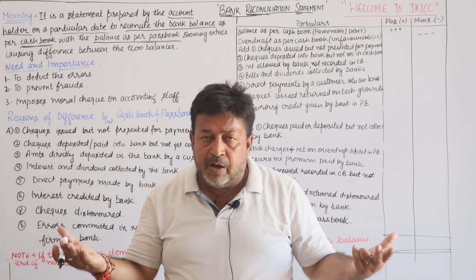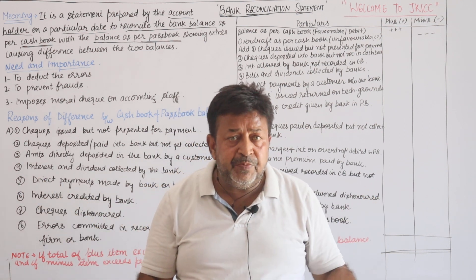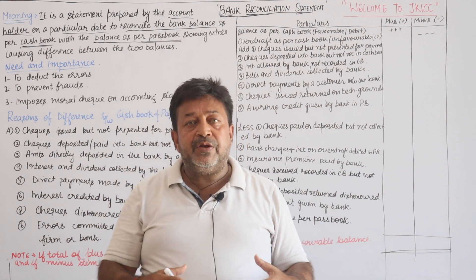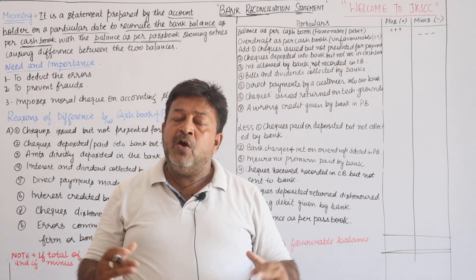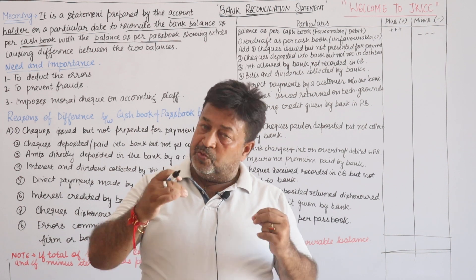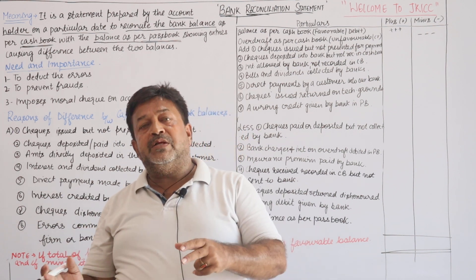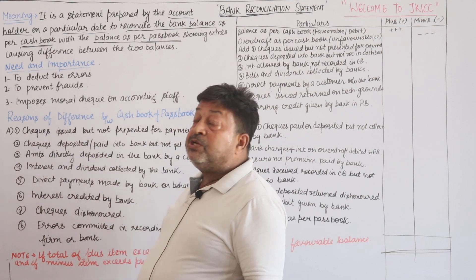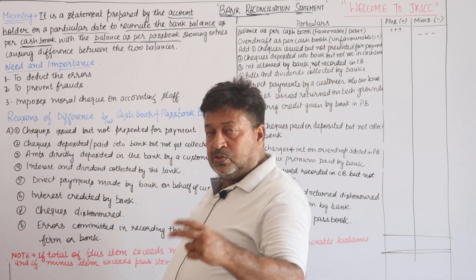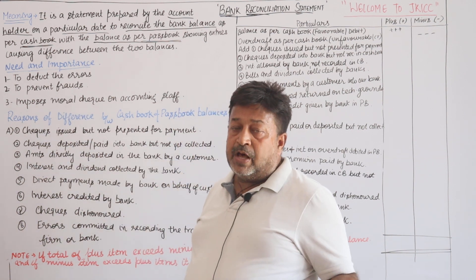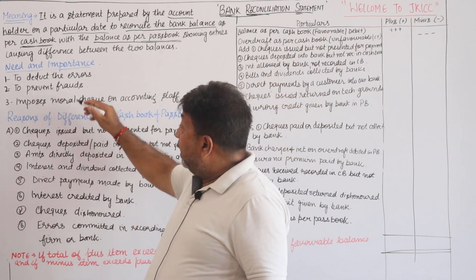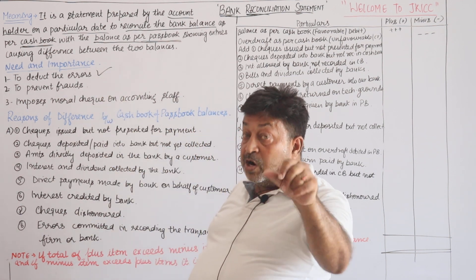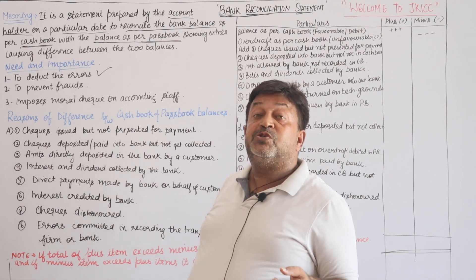The entries will be in front of us — pass book and our own — which we will see, which we will add, which the bank has added extra. We will reconcile and at the end the cash book balance and bank balance will match. This need arises also because if there is a difference, there may be errors. We will detect errors and frauds, because frauds are very much possible.